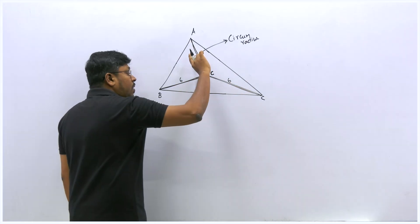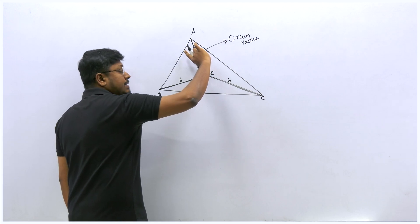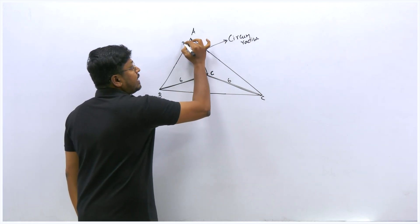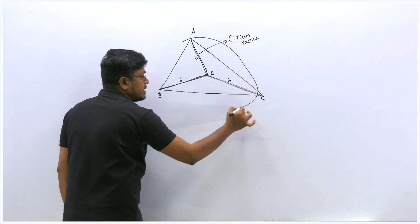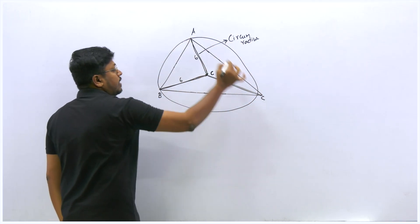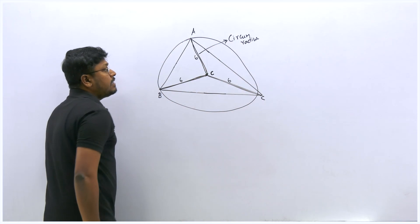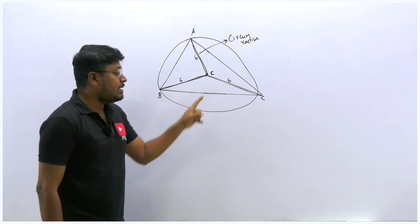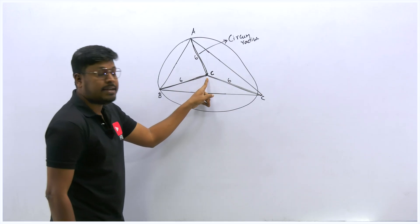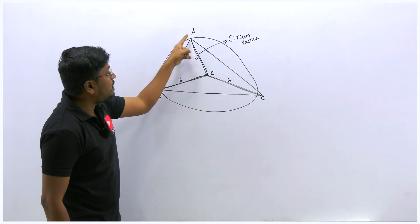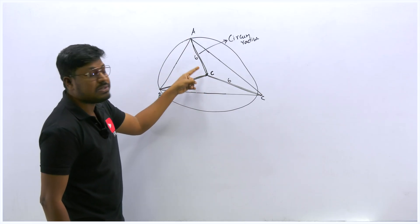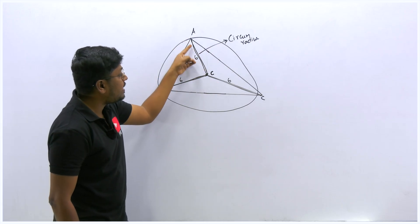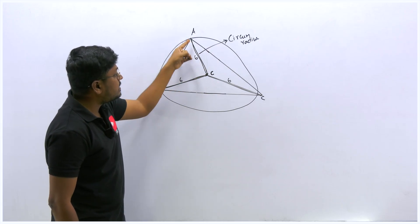Using a compass from the circumcenter point, you can draw a circle that exactly touches points A, B, and C. That is why it is called the circumcenter—the circle passes through all three vertices. Since this radius is inside a triangle, we call it the circumradius.